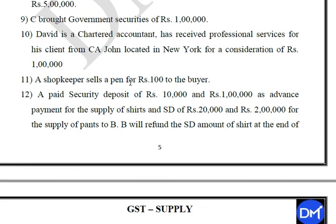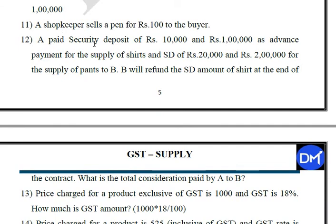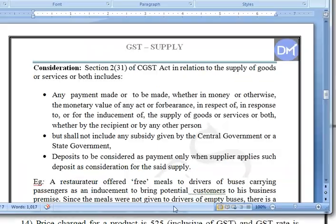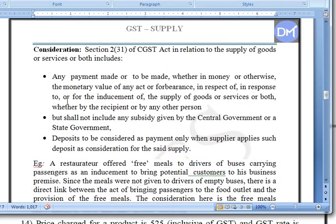This is the case of a security deposit of Rs.10,000 and Rs.1 lakh as advance payment for the supply of shares, and security deposit of Rs.20,000 and Rs.2 lakh for supply of bands. The security deposit will be refunded at the end of the contract. Considering the definition: a deposit is considered as payment only when the supplier applies such deposit as consideration for the supply.